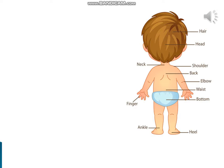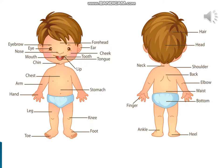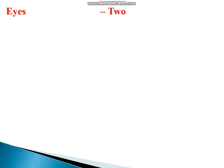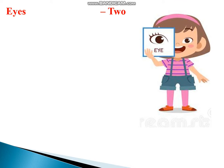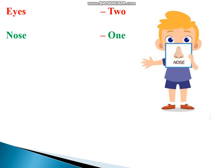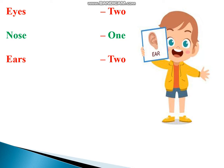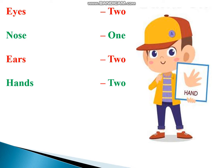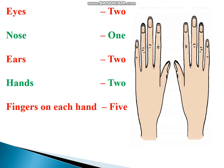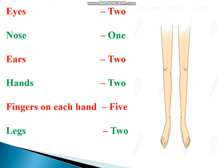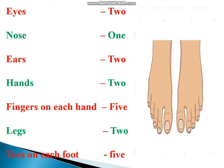Let us learn about the different quantities of these body parts. Count these body parts with me. We have two eyes, one nose, two ears, two hands, five fingers on each hand, two legs, and five toes on each foot.